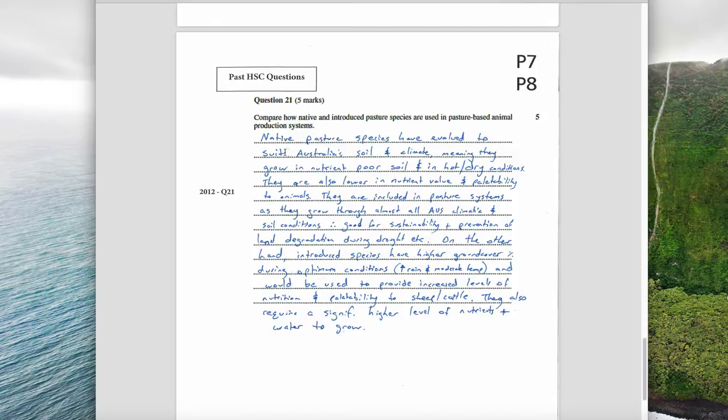I've said native pasture species have evolved to suit Australia's soil and climate, meaning they grow in nutrient-poor soil and in hot dry conditions. They're also lower in nutrient value and palatability to animals. They're included in pasture systems as they grow through almost all Australian climatic and soil conditions, and therefore they're good for sustainability and prevention of land degradation. So this is the reason that they're important for animal production systems.